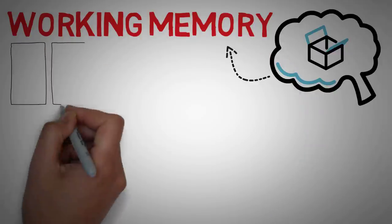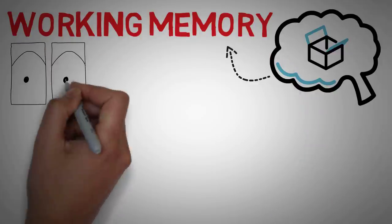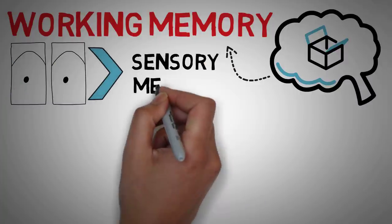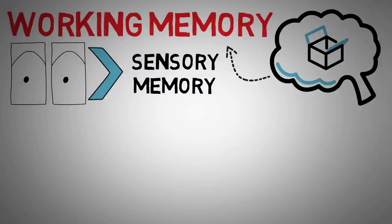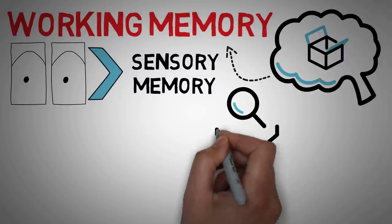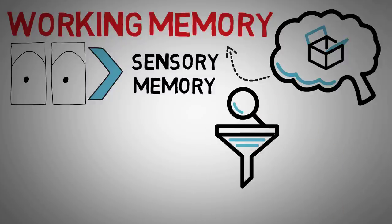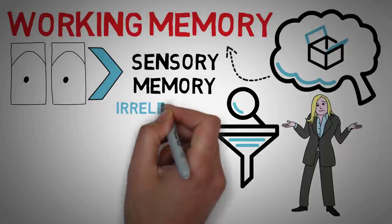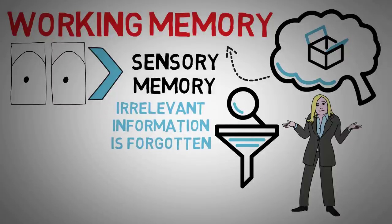When you see something, hear something, or take in any type of information through your senses, it enters what psychologists call sensory memory. From here, your brain quickly filters out information that is irrelevant. If you're intentionally devoting your focus to a video game, for example, the sound of the wind or the smell of your food cooking in the next room is forgotten. The information that is relevant goes into your working memory.